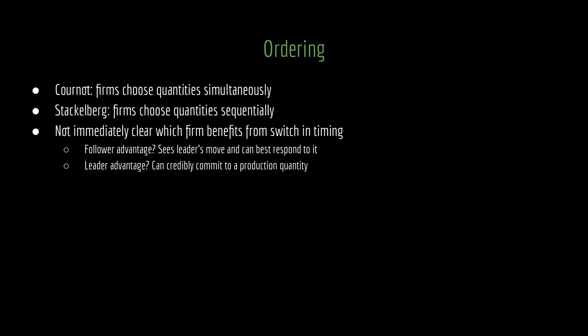The leader might also have an advantage here. It can credibly commit to a quantity of production. By going first, it can say, 'This is my quantity, and I can't change it, and now you have to make your choice based off of what I've done.' What we've seen when solving for the Stackelberg quantities is that the following firm's quantity of production is a function of the leading firm's initial choice, which means the leading firm actually has second-order control over what the following firm is going to do, and conceivably the leader might be able to take advantage of that.